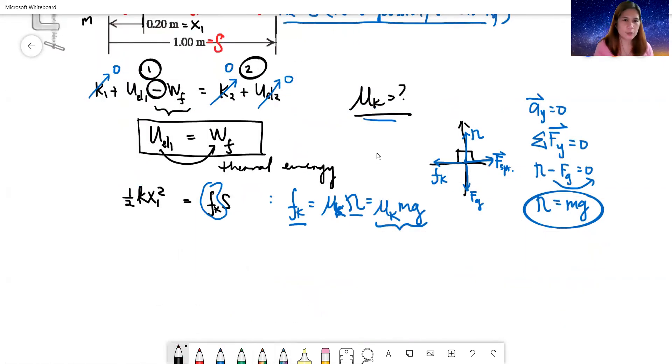In this case, kinetic friction is just equal to mu sub k times the normal force, which is mg. So we will replace kinetic friction with mu k mg. Same strategy as we did in Newton's laws. So I have here one half k x1 squared. Kinetic friction is coefficient of kinetic friction times the mass times 9.8 and the path taken, the distance taken. Therefore, our equation becomes mu k equals k x1 squared over 2 mg s.